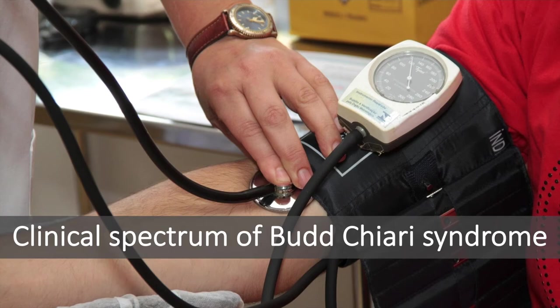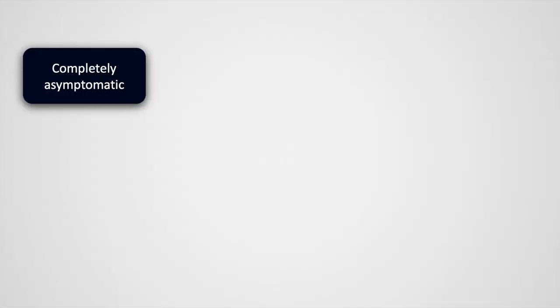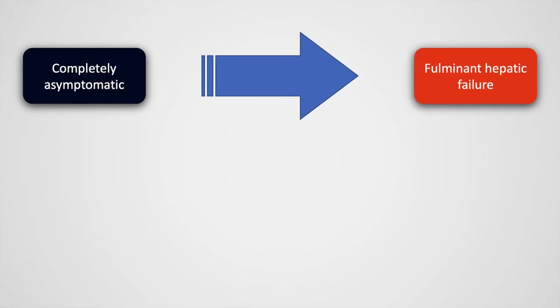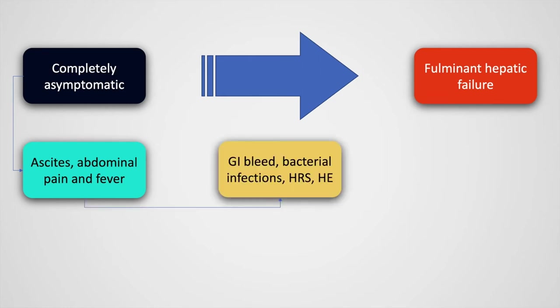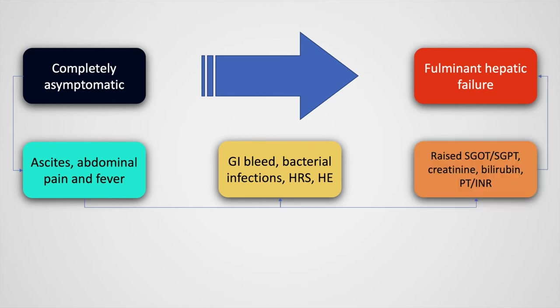The clinical spectrum of Budd-Chiari syndrome can range from completely asymptomatic to fulminant hepatic failure. This spectrum may be interspersed by symptoms such as ascites, abdominal pain, and fever, and the entire spectrum of liver disease complications — including GI bleed, bacterial infections, hepatorenal syndrome, and hepatic encephalopathy — are possible. Lab investigations may show abnormalities in SGOT, SGPT, creatinine, and bilirubin, and the patient may also have coagulopathy.